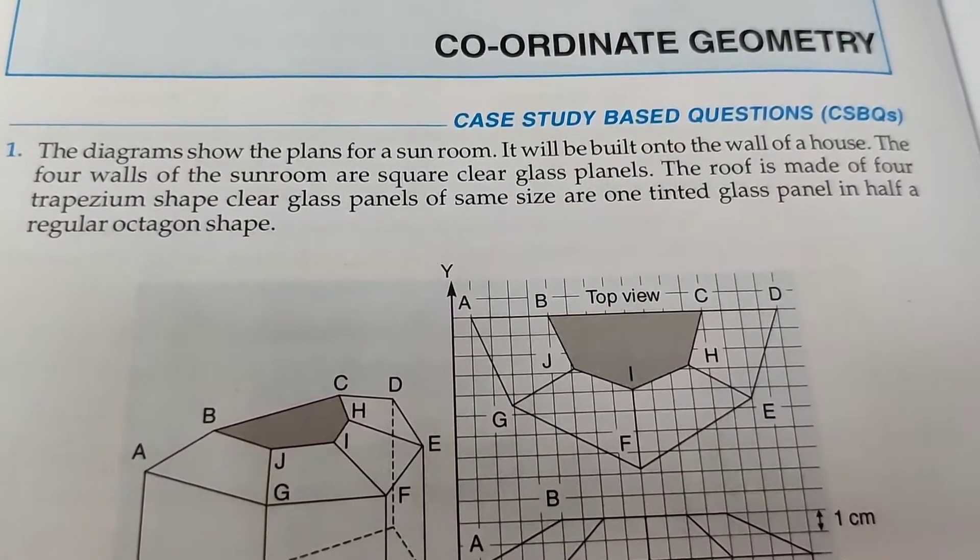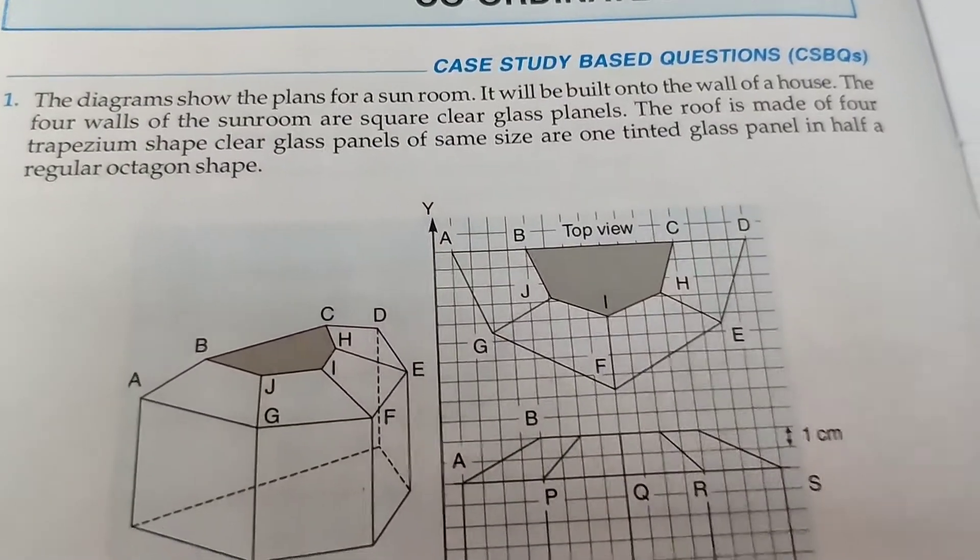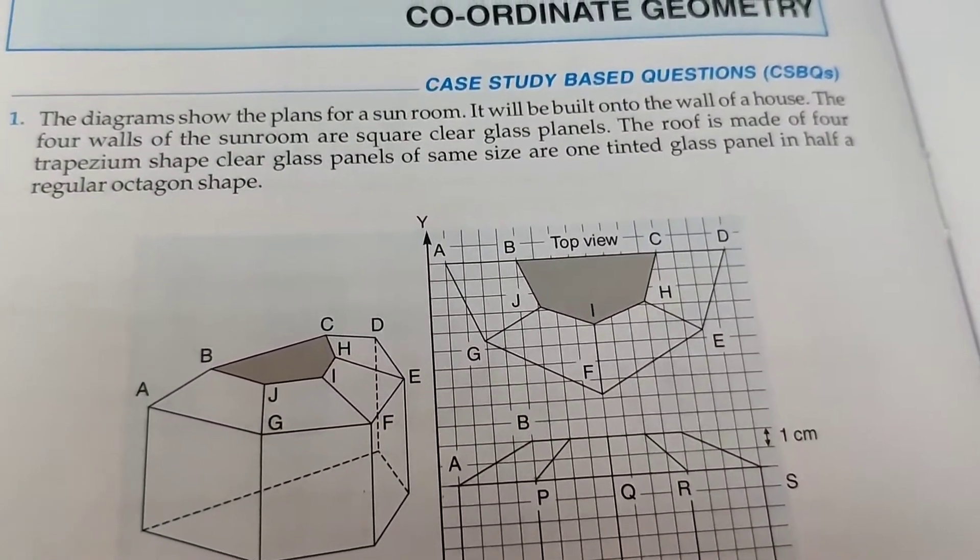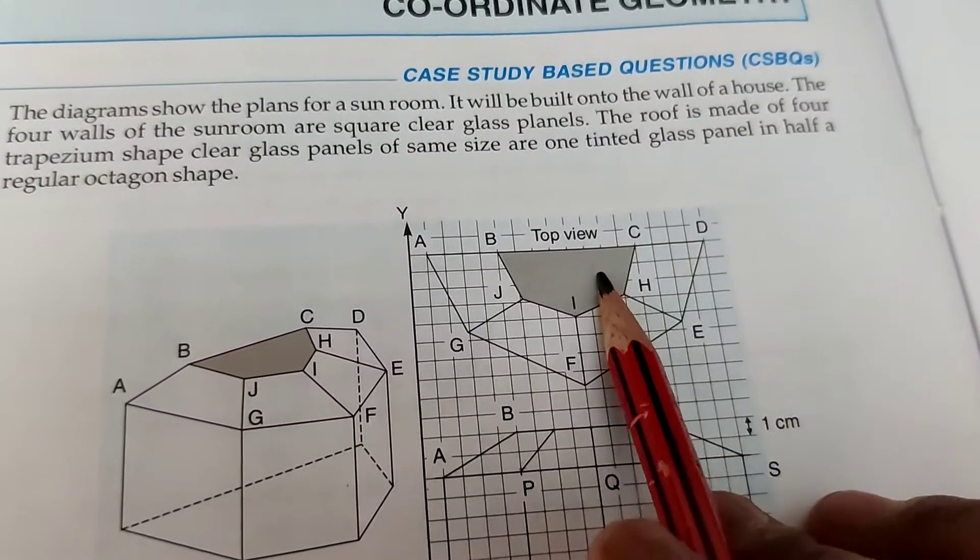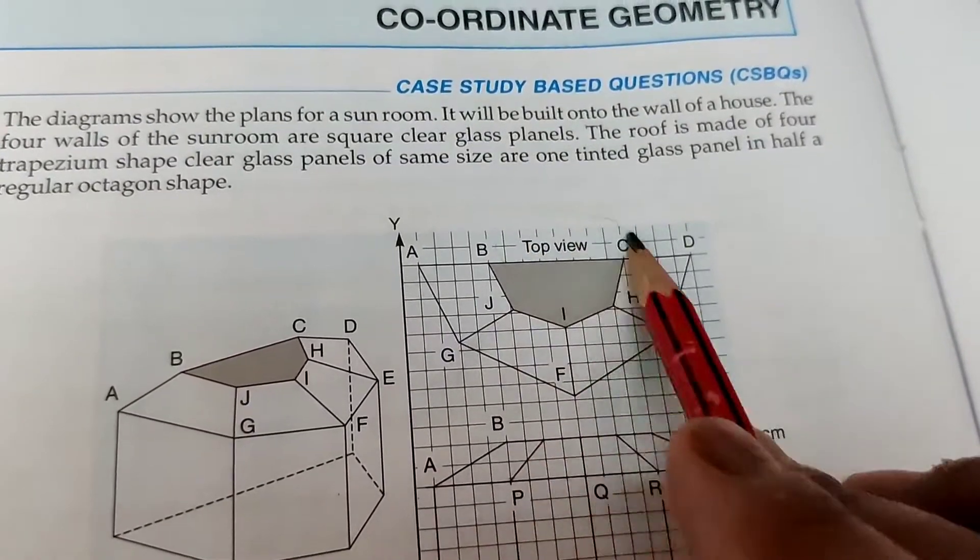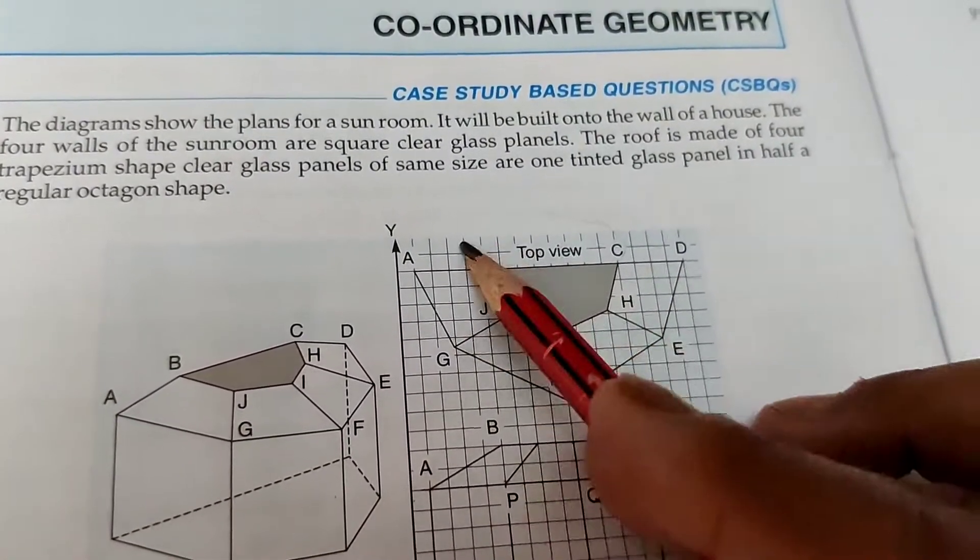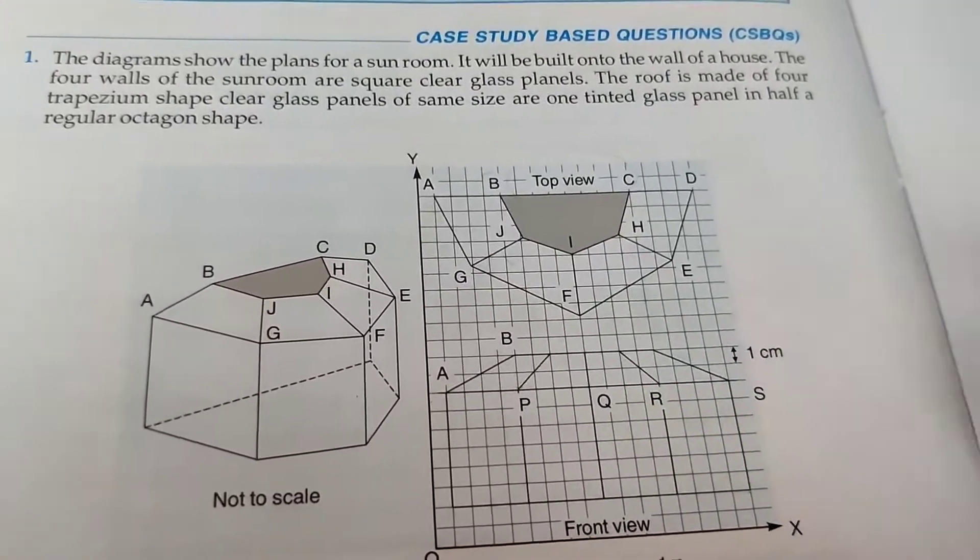This is a figure. That is the top view, half of the octagon. These are the trapezium shapes and here is a square shape.